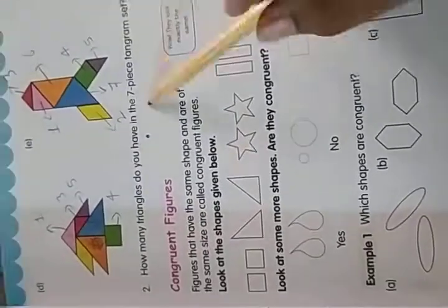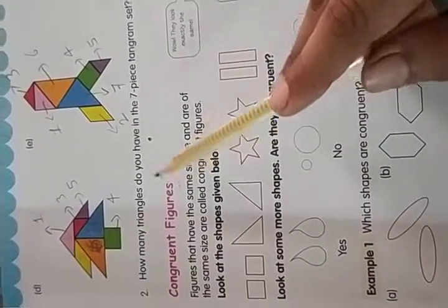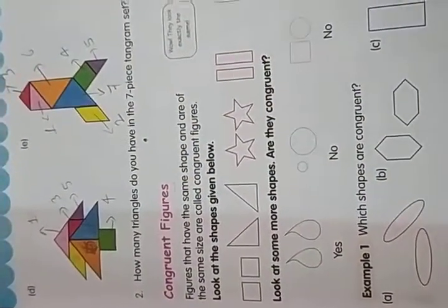In tangram set, how many triangles do you have? In 7 piece tangram set, total 5 triangles. Next day, we will continue our next topic, congruent figures. Now, thank you.